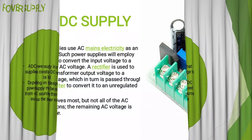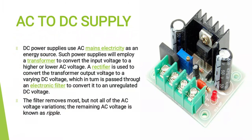DC power supplies use AC mains electricity as an energy source. Such power supplies will employ a transformer. A rectifier is used to convert the transformer output voltage to a varying DC voltage, which in turn is passed through an electronic filter to convert it into unregulated DC voltage. The filter removes most but not all of the AC voltage variations; the remaining AC voltage is known as ripple.